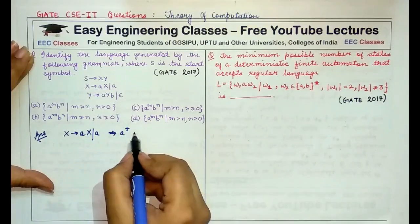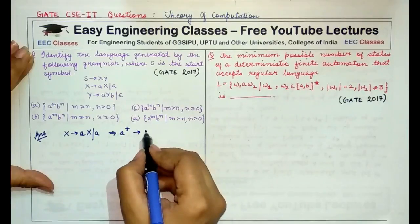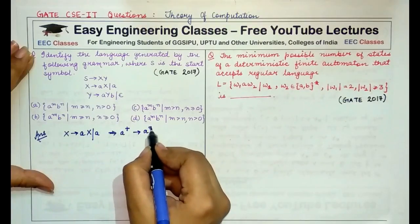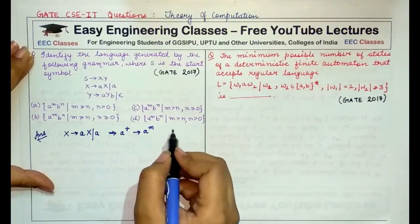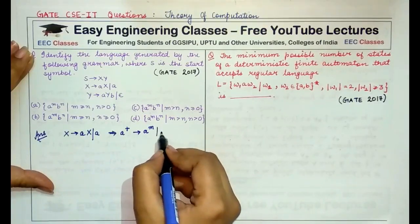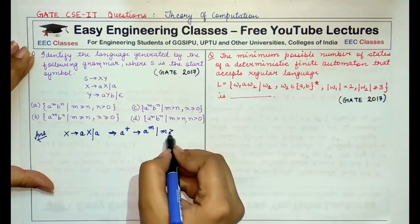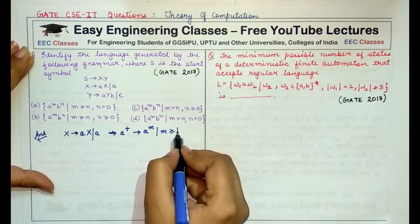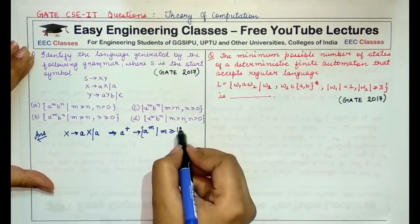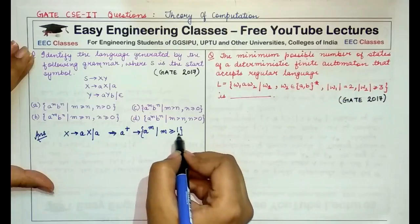Basically we can write that X denotes A to the power of M, where M is any variable. That means A any number of times such that M has to be greater than or equal to 1. Because, if X is replaced by a single A, it will be equal to 1.